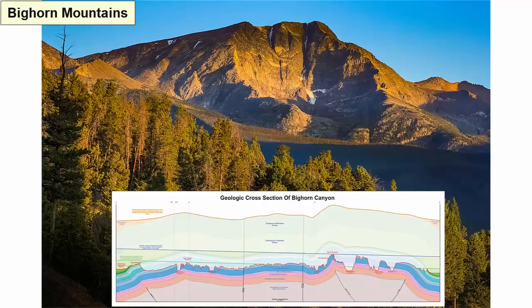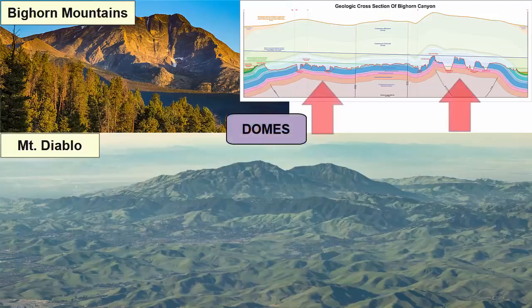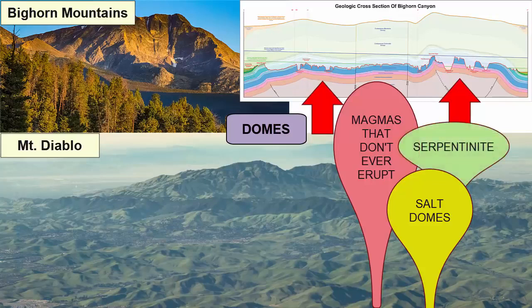The Bighorn Mountains in Wyoming and Mount Diablo in the San Francisco Bay Area — what kind of mountains are these? Domes. When less dense material buried underground rises upward with a buoyant force, it pushes the rocks above it into a dome. Examples include lower density molten rock that pushes up but never makes it out, buried salt beds that form upward-migrating salt mounds, or cores of serpentinite — which forms when mantle rock at seafloor spreading centers mixes with hot water — that migrates upward along cracks and pushes into domes.